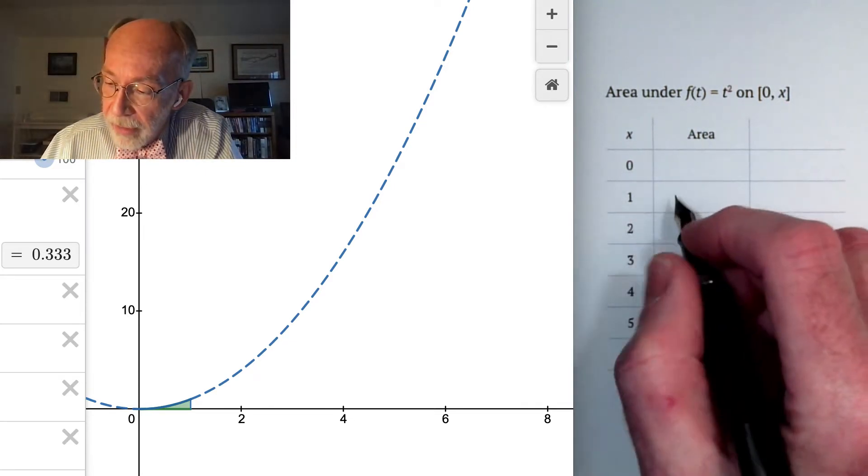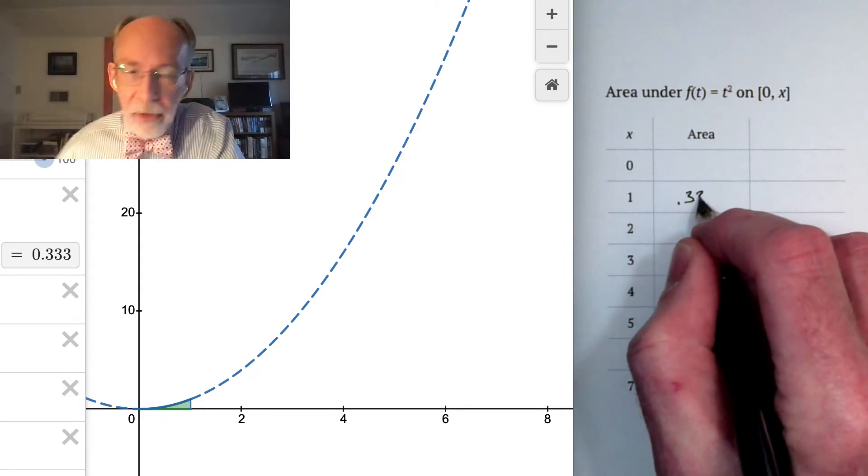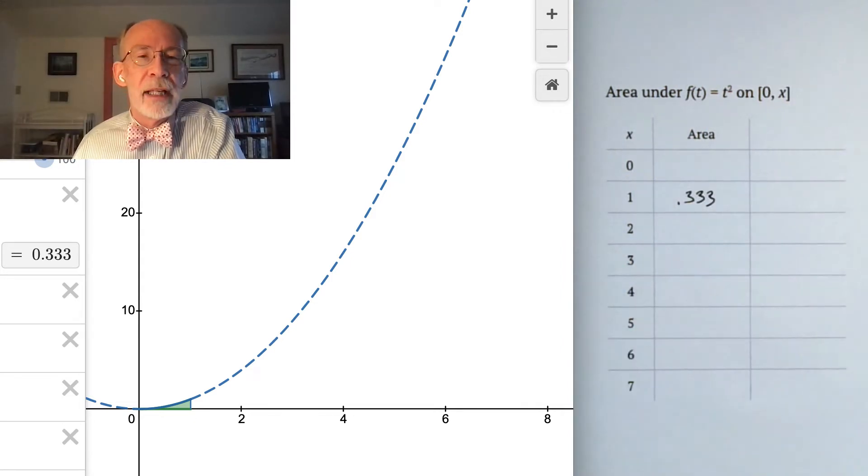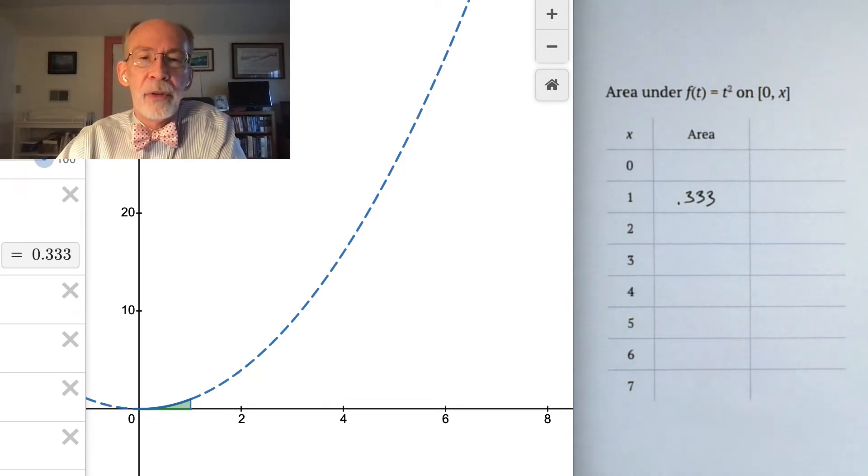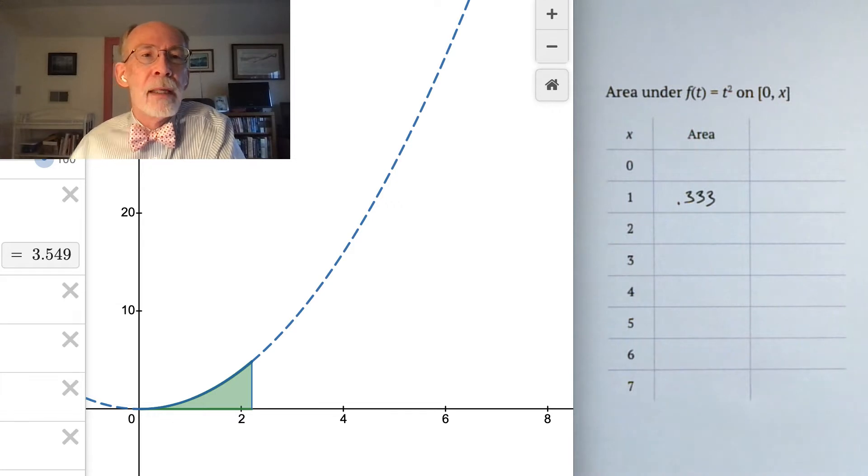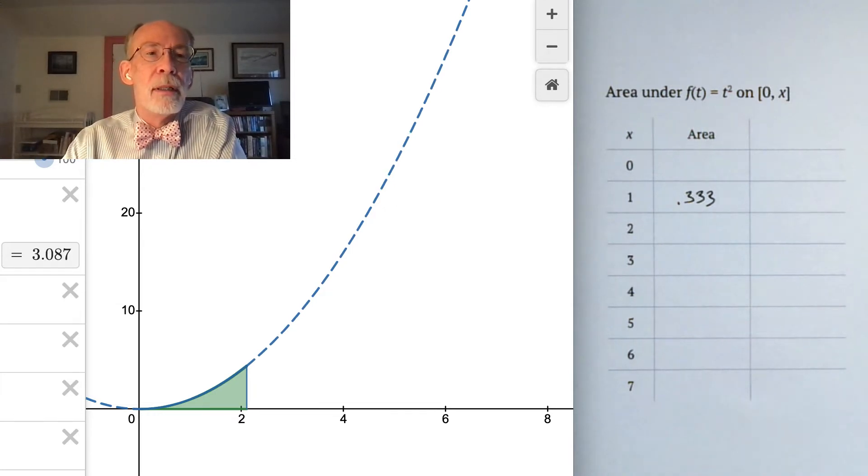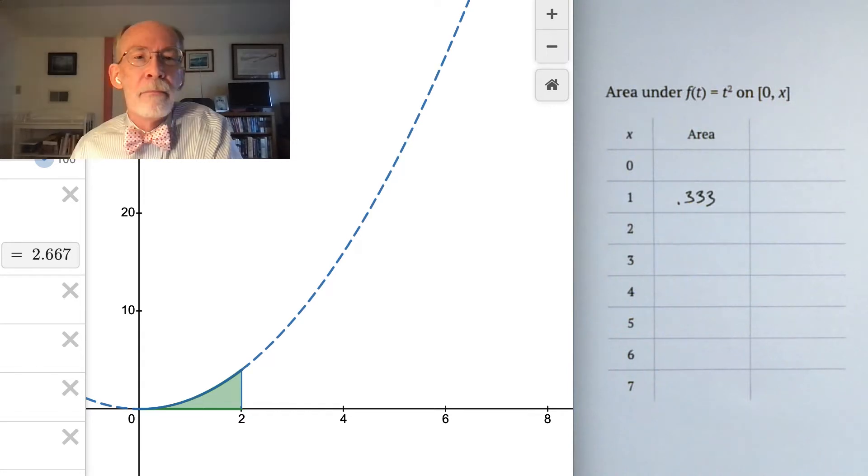But off to the left, you'll see our midpoint estimate of the integral from 0 to 1 under the function f of t equals t squared. And as you can see, it's essentially a third. Just for kicks, I'll write it as it comes out. These are set to round to three places. If I click this up to x equals 2, I see that it's about 2.667.